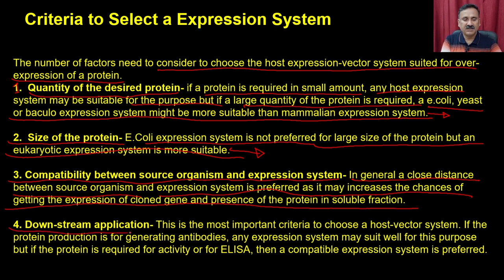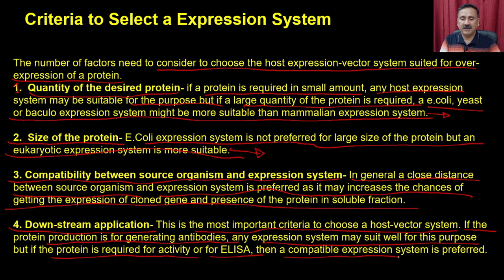The downstream application is the most important criterion to choose a host-vector system. If the protein is for generating antibodies, any expression system may suit, but if the protein is required for activity or ELISA then a compatible expression system is preferred. For example, you cannot use the bacterial expression system if the downstream product is for developing a vaccine or generating antibodies, because bacterial products can cause allergic reactions in patients. The downstream application ultimately decides which expression system to use.